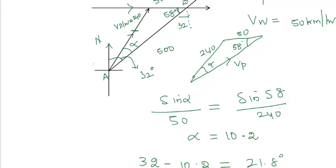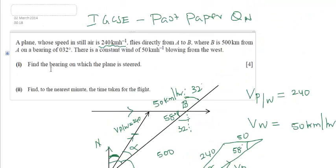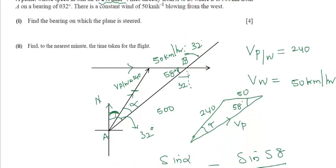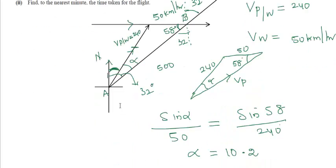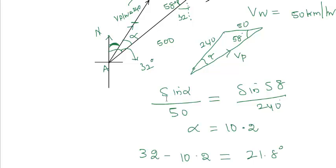From the total bearing, that is 32 minus 10.2, which gives 21.8 degrees. This has to be the bearing on which the plane is steered.